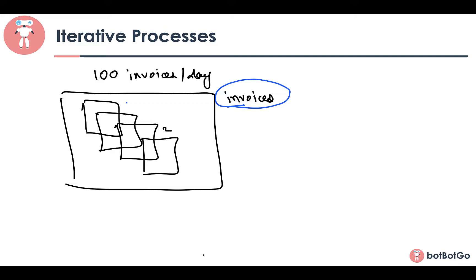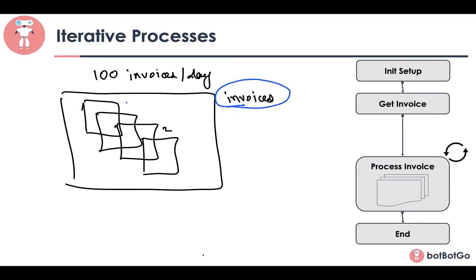If we look at the workflow, it looks entirely the same as the previous process. The only difference is, in the Get Invoices step, instead of passing a single invoice, we pass the entire path of the folder which contains the invoices. Inside the process step, we process each of those invoices one by one. Once all the invoices have been processed, a notification mail is sent to the user. This way, you just need to run the process once and all the invoices are processed.